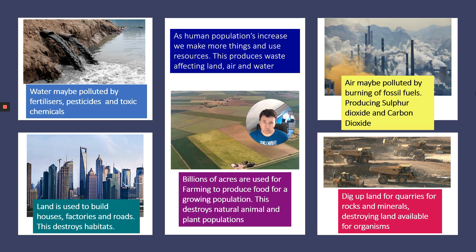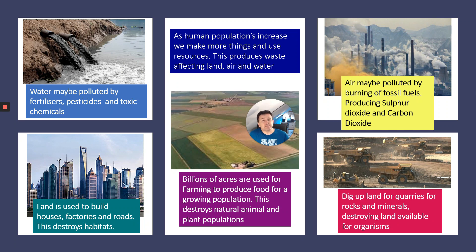Land is used in different ways: for building houses, factories, and roads — destroying habitats when cities and towns are constructed. Land is also used for farming to produce food for a growing population, which destroys natural animal and plant populations. And we need mineral resources, so quarrying is used to extract rocks and minerals from the land.